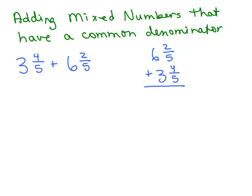So here's how we do it. Remember what 6 and 2 fifths means? It means 6 plus 2 fifths, and this means 3 plus 4 fifths. So what we're going to do is add the whole number of each together, which is 9, and then add the fractional parts together. We've got a common denominator — they're fifths — and 2 plus 4 is 6.